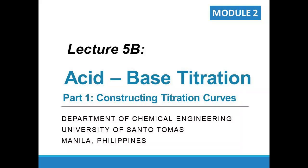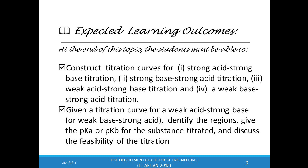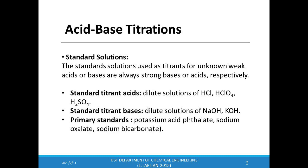Welcome back to our lecture series. In this video lecture we will be looking at the first type of volumetric analysis: acid-base titration. For the first part of lecture 5b, I will be teaching you how to construct titration curves. The learning outcomes are: to construct titration curves for the four major types of acid-base titrations, to identify regions and give the pKa or pKb from a given titration curve, and to discuss the feasibility of titration.